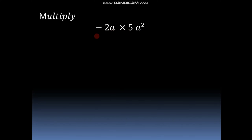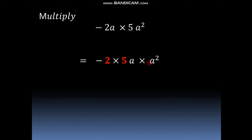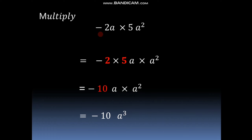For the first polynomial the coefficient is minus 2 and for the second one the coefficient is 5, so we have to multiply these coefficients separately. Firstly we multiply the coefficients: minus 2 into 5, then collect the remaining terms — a into a square. So minus 2 into 5 gives minus 10, into a into a square that is a cube. The product of minus 2a into 5a square is minus 10a cube.